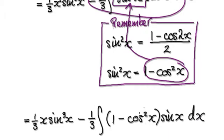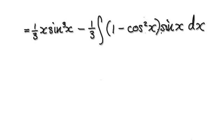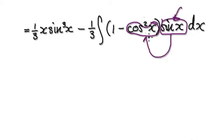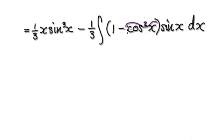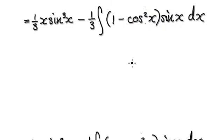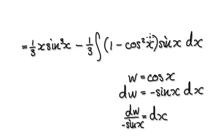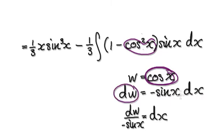So this thing here will then become this. Now you could again train yourself to recognize that this thing here is near enough the exact derivative of this thing here. You've got to train yourself to recognize that this is near enough the derivative of this, so you should be able to jump to this — let a new variable, say w, be cos of x.